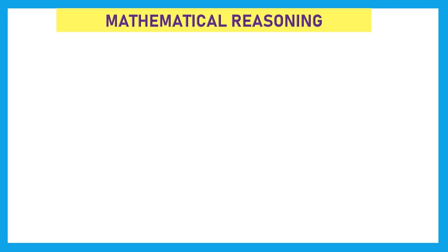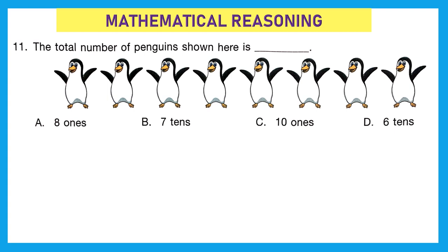Now we move to mathematical reasoning. Question 11: 'The total number of penguins shown here is dash.' Counting: 1 through 8 — I can see 8 penguins. Looking at the options: 8 ones means just 8; 7 tens means 70; 10 ones means 10; 6 tens means 60. The right option is A — 8 ones — because we have 8 penguins.